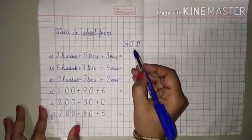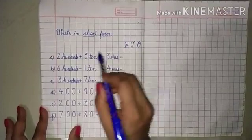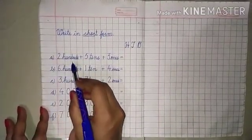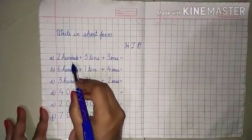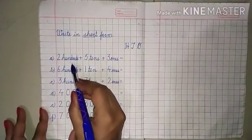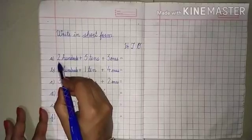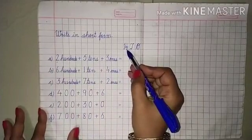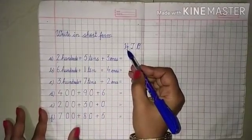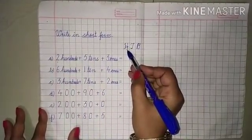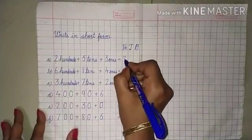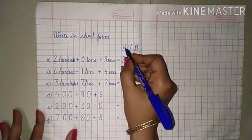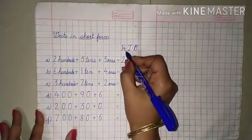Hundreds, tens, ones. Now see the first example: two hundreds. It means hundreds is the place of two. So we can write two under the heading of H, as H stands for hundreds. I will write two here.